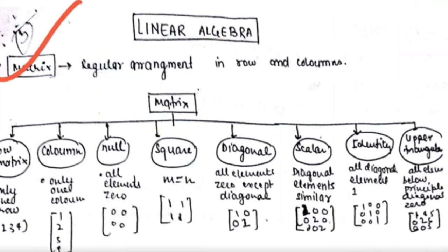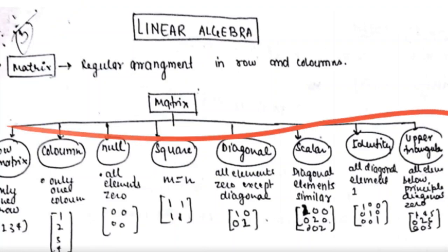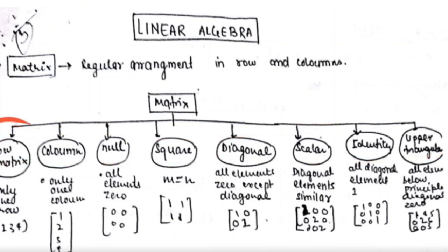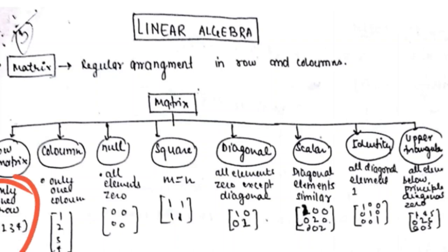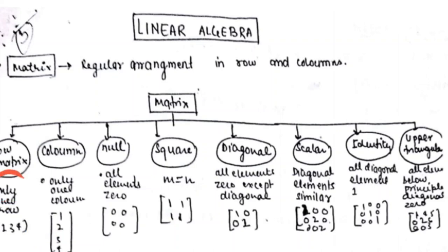There are various types of matrix. The first one is row matrix. A row matrix is one in which only one row is present. There can be many columns, but the row must be one. If there is only one row, then this is known as a row matrix.